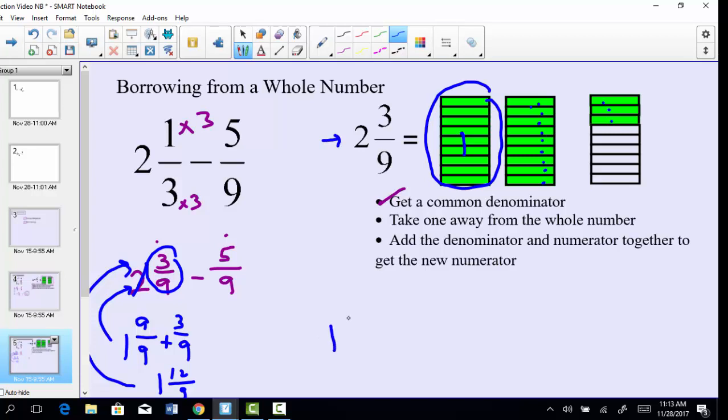Now what's nice is I could do 1 and 12/9 minus 5/9 easily and comfortably because these are numbers I'm used to working with. 1 minus nothing is 1, 12 minus 5 is 7, and then 9 is my denominator. So I get the answer both ways.